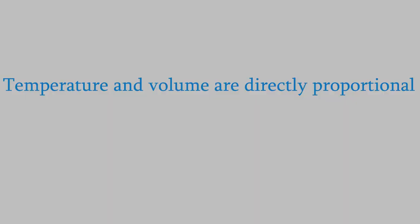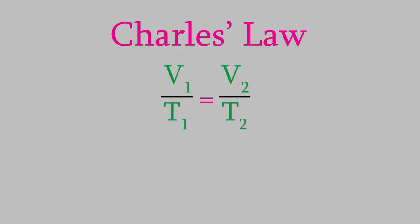Jacques Charles realized that this means there's a connection between a gas's temperature and its volume. It turns out that the volume and the temperature are directly proportional. That idea is known as Charles's Law, and we can express it with this equation: V1 over T1 equals V2 over T2. One thing that's important to note is that in this equation, the temperature must be in Kelvin. It doesn't work if you use Celsius temperatures.